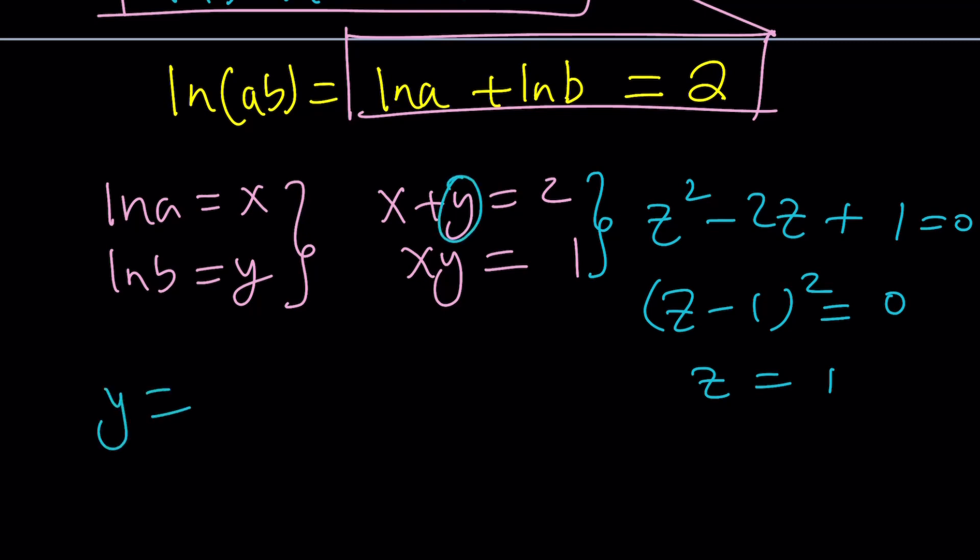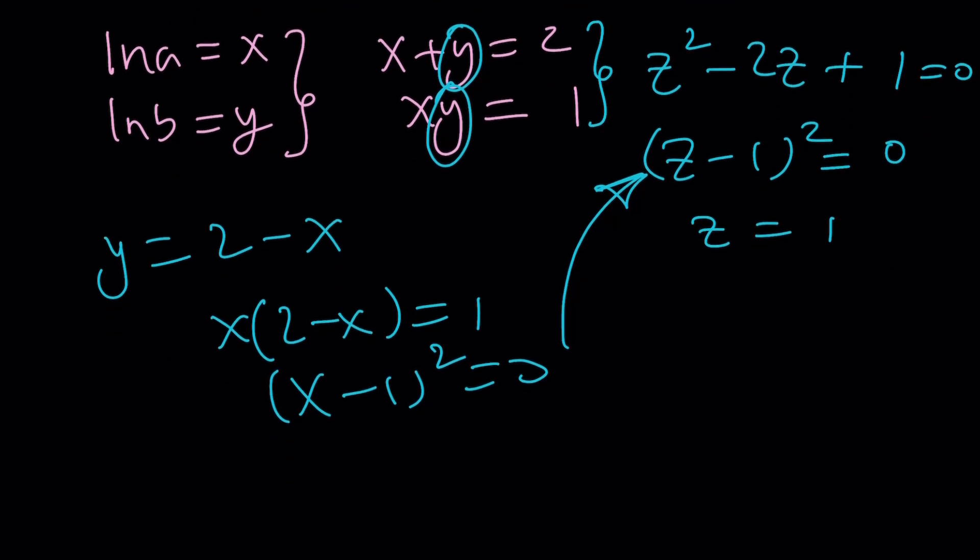You could also get that by just isolating y from the first equation, write it as 2 minus x, and then plug it in here. You're going to get x times 2 minus x equals 1. And then eventually, you're going to get this equation, which is the same as this one. Because remember, x is a solution of this equation, so you can replace z with x as well as with y. So far, so good. I hope it does make sense.